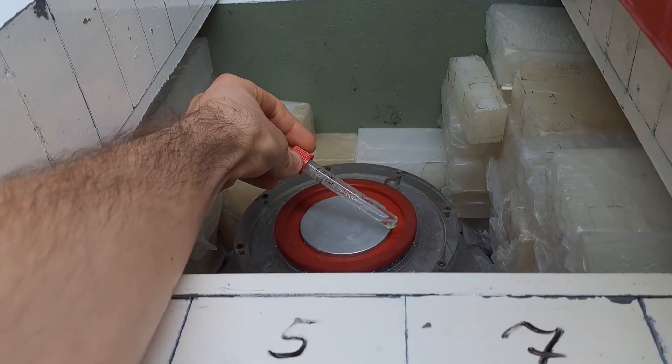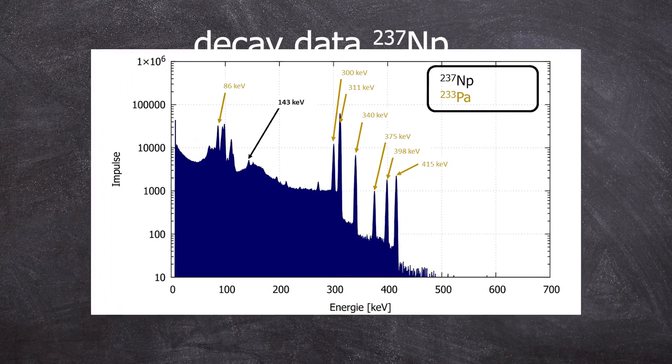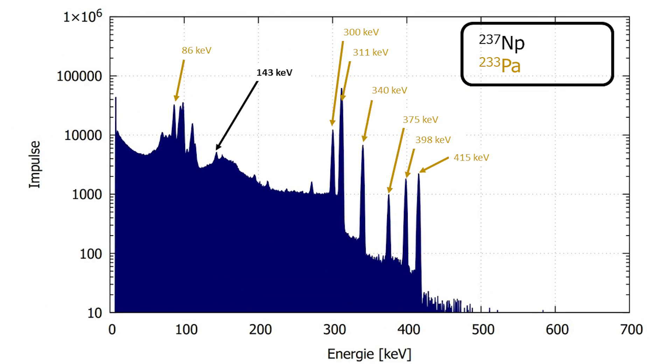Okay, let's go to the decay data. Here's the gamma spectrum. You can see lines from Neptunium and the daughter nucleus, Protactinium-233, alongside a bunch of XRF lines that I haven't marked.